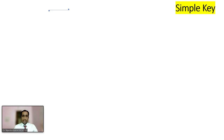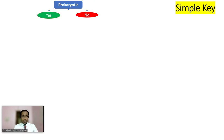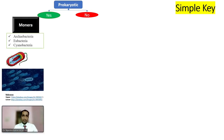Now see this very simple key so that you can learn easily. First of all, are they prokaryotic — meaning nuclear membrane and double-layered cell organelles are absent or not? If they are absent, yes, then they belong to Monera. Examples are Archaebacteria, Eubacteria, and Cyanobacteria.